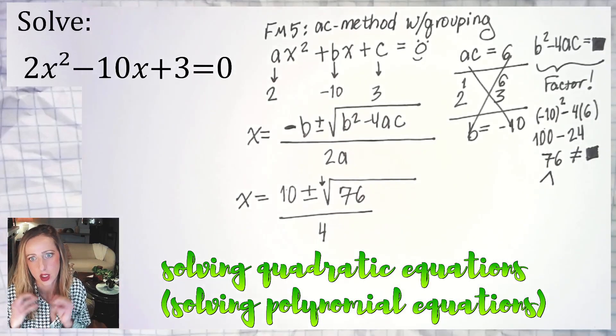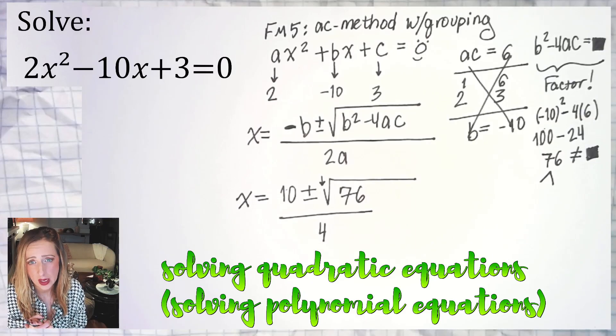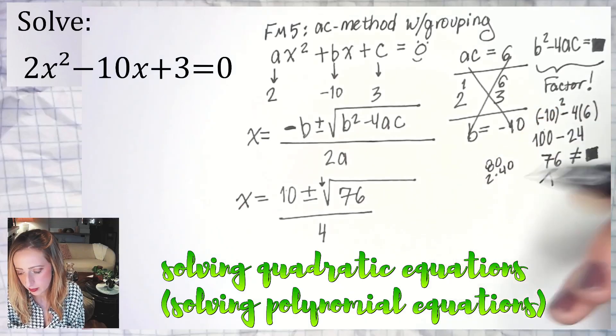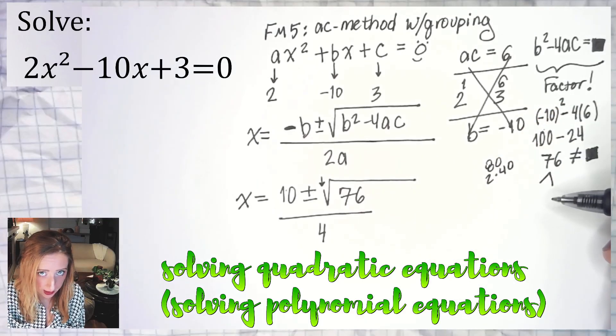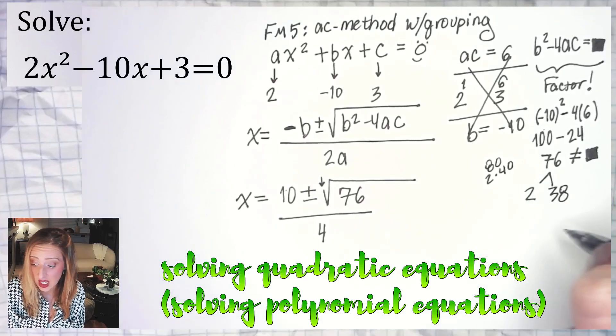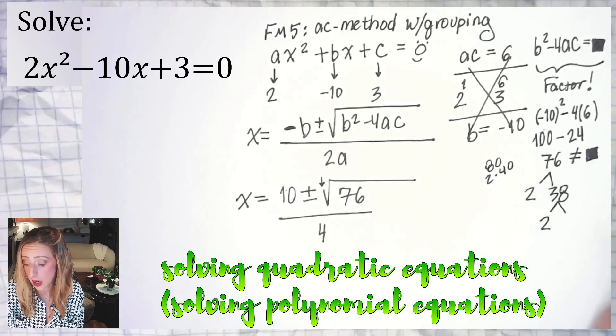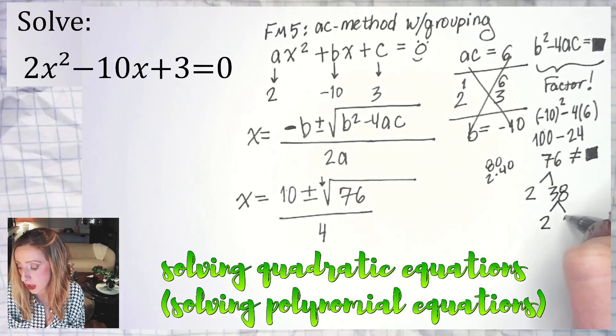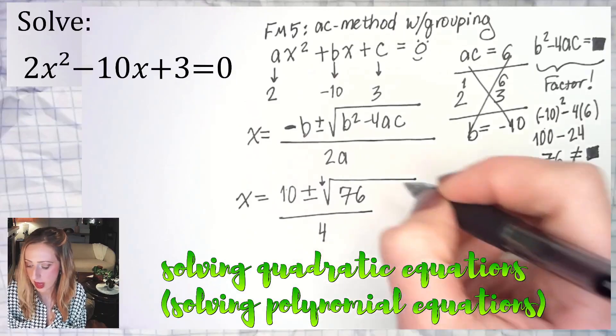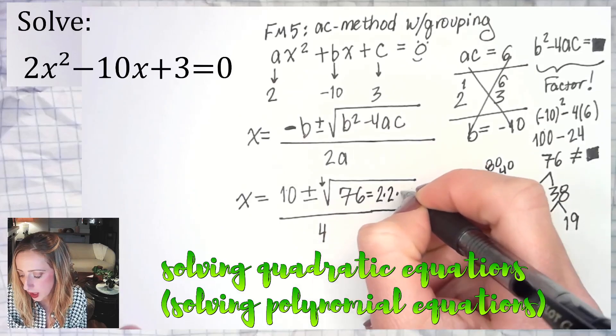What's the breakdown of 76? What is the prime factorization of 76? Well, it's definitely even, right? 76 is 2 times 38. 38 ends with an 8. It's also even. 2 times what? 38 is 2 times 19 and 19 is prime. In this radical, I'm dealing with 2 times 2 times 19.